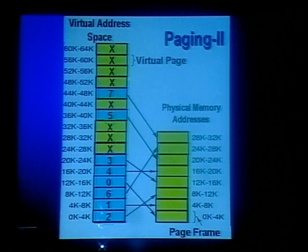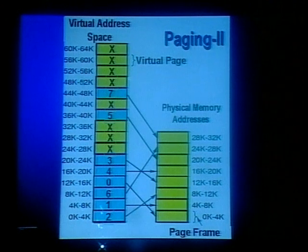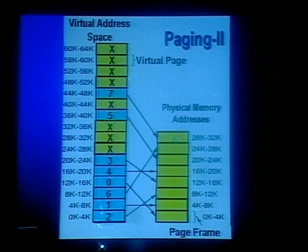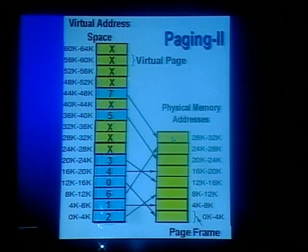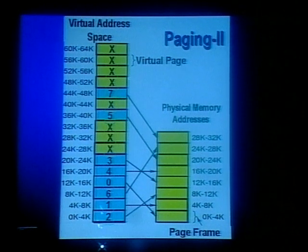In this diagram, we see the virtual address spaces and virtual pages more clearly. We can have more virtual pages than the physical memory addresses. It is important to remember that the size of the virtual page and the size of the page frame must be equal. It is primarily the job of the memory management unit to map virtual address space with the physical memory address space. For example, virtual page 7 is mapped to physical memory address 28K to 32K, and virtual page 5 (from 36K to 40K) is mapped to physical memory 20K to 24K.